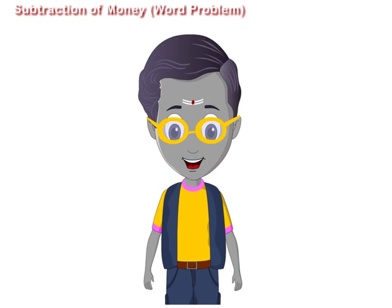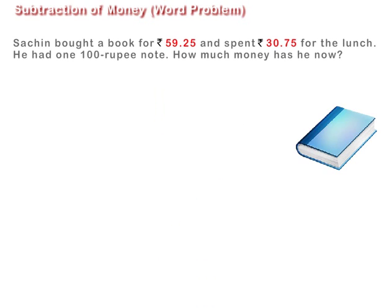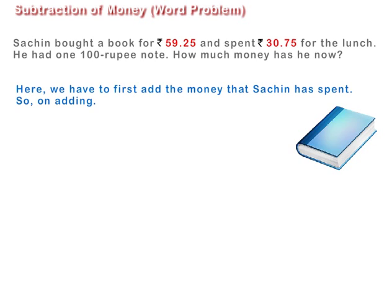Let us solve a word problem on subtraction of money. Sachin bought a book for Rs. 59.25 and spent Rs. 30.75 for lunch. He had a Rs. 100 note. How much money does he have now?